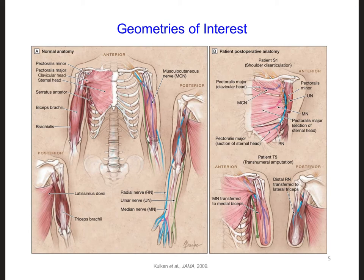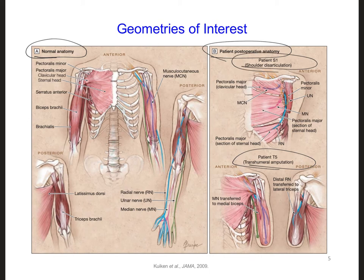On the left is an example image of normal anatomy, and on the right are the anatomies of two example amputees, here for patient T5 and patient S1.